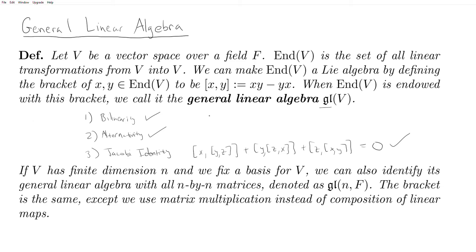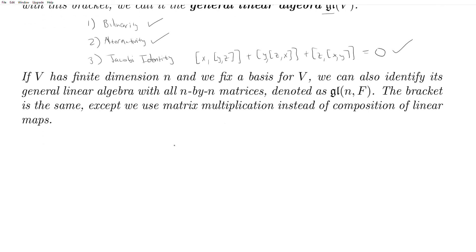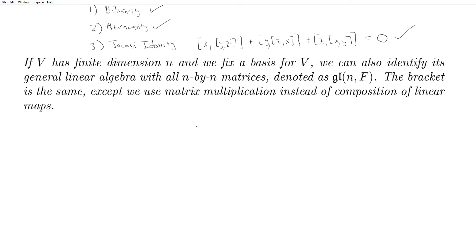We'll be looking at gl(V) a lot early on. However, it's nice to identify V with a basis and look at gl(V) in terms of matrices — we can think of linear transformations as matrices once we fix a basis for the vector space. If V has finite dimension n, we can identify gl(V) with gl(n, F). Instead of composition of linear maps we use matrix multiplication, but it's the same bracket. gl(n, F) is a little easier to work with because matrices are less abstract.